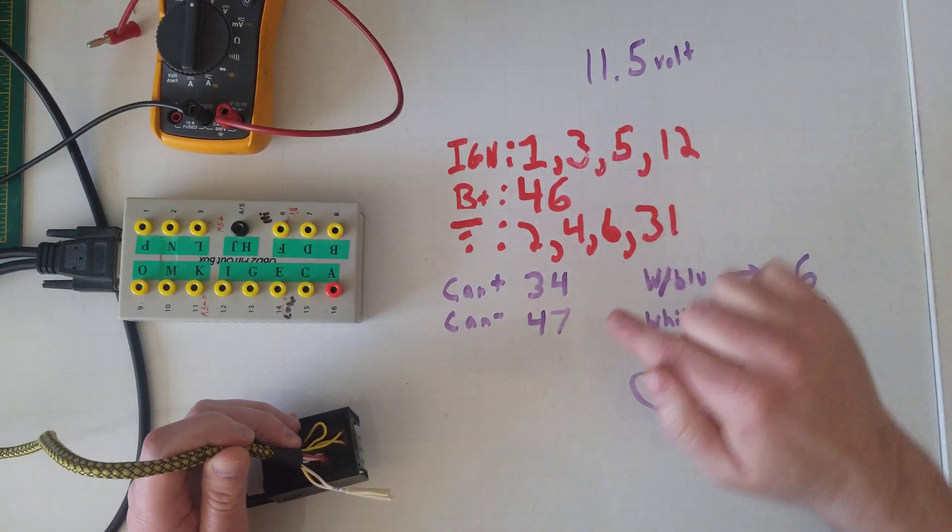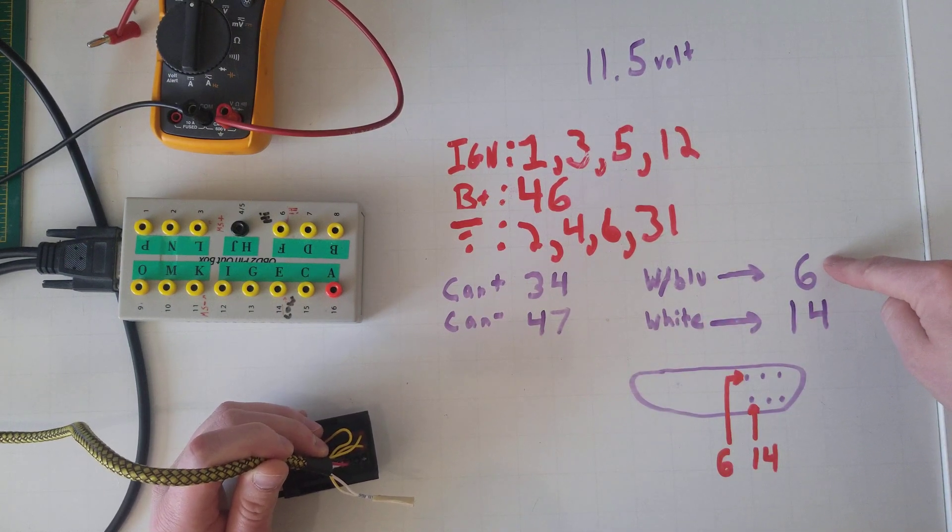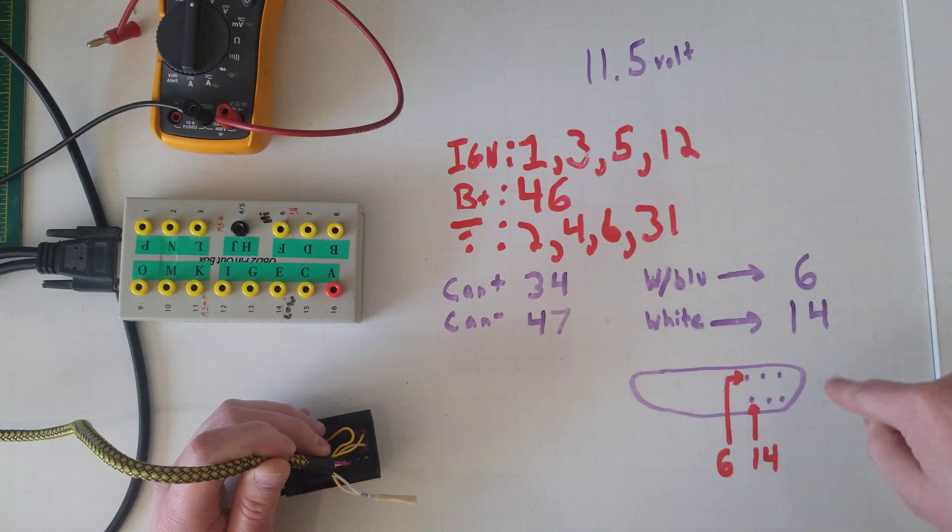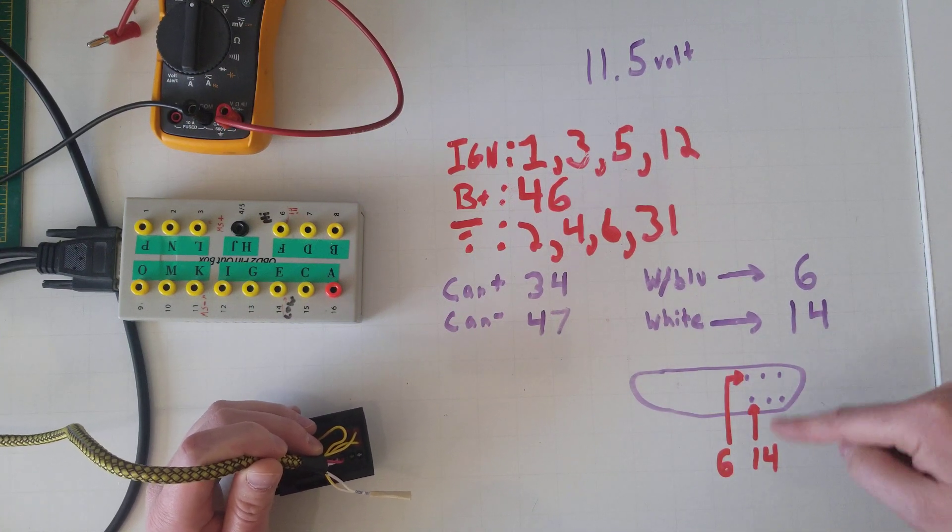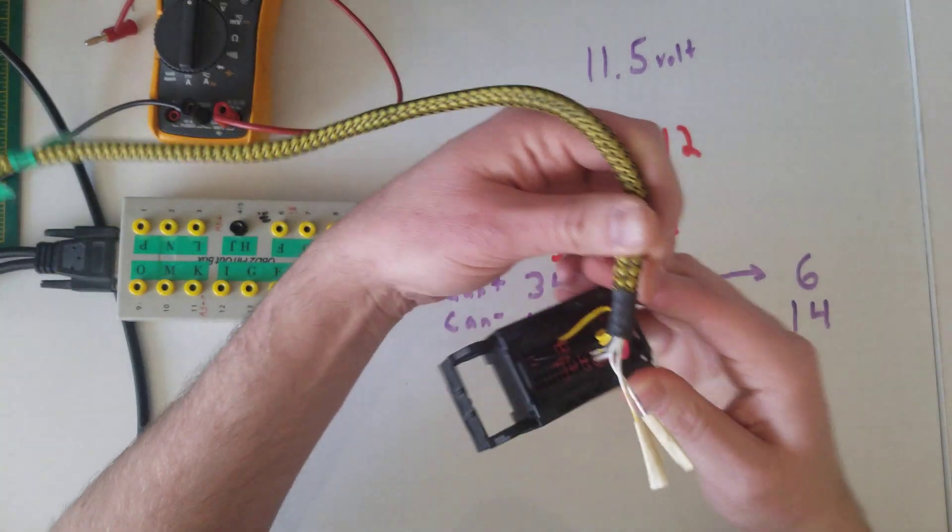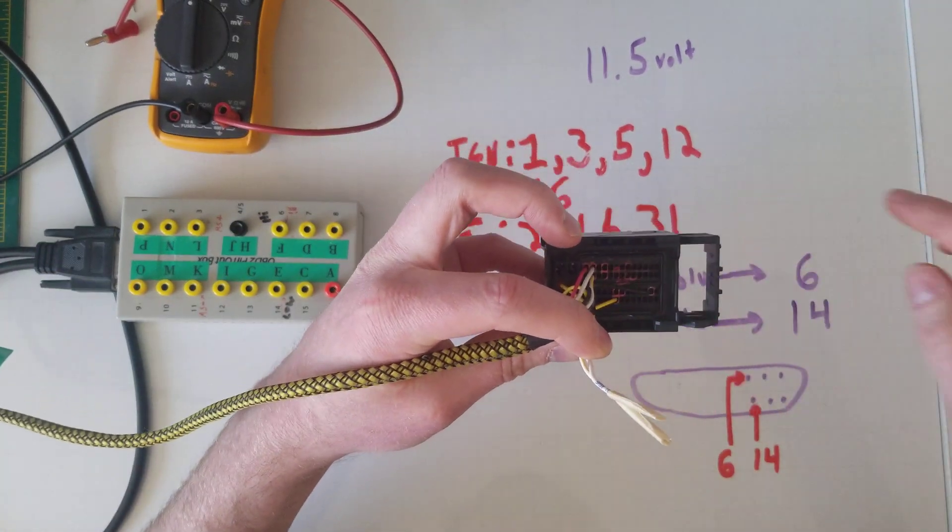Here's the data lines, 34 and 47. This is the pins on the OBD2 or data link connector, and this is what it's gonna look like looking at it. Pin 6 and 14 are on top of each other, and 34 and 47 are kind of right on top of each other as well.